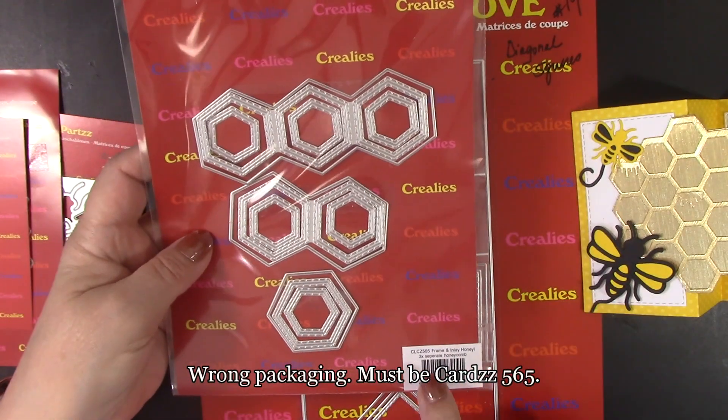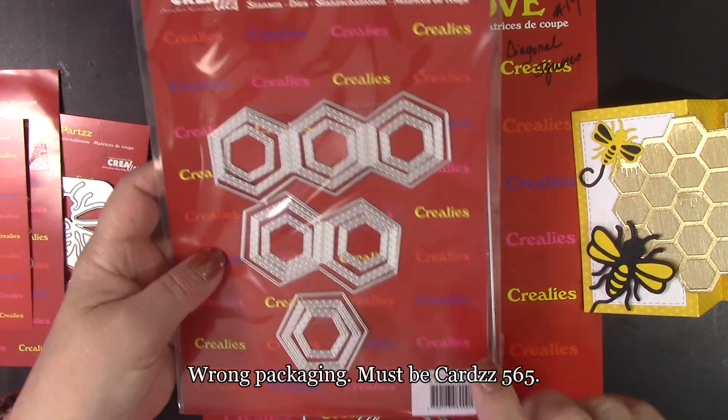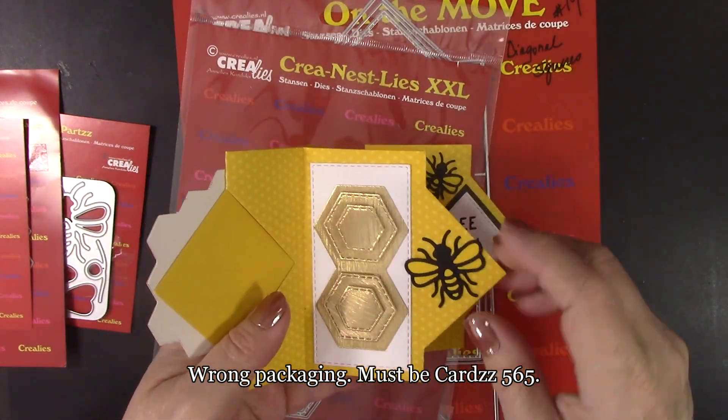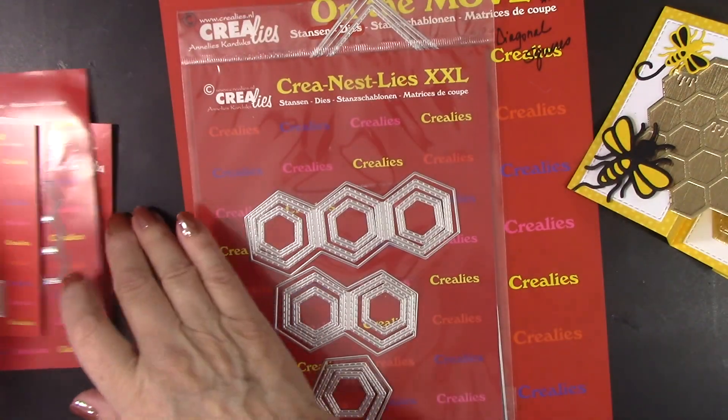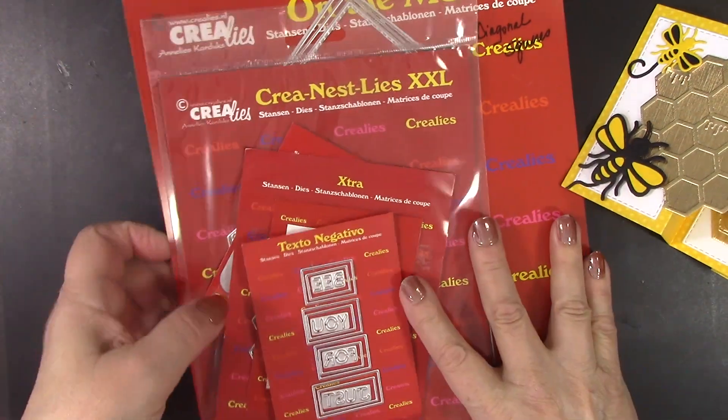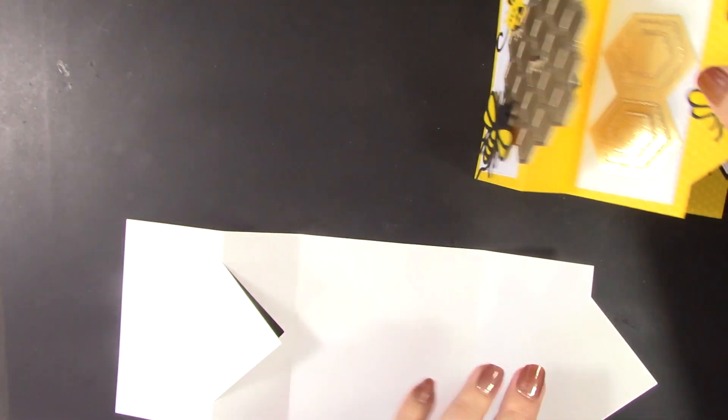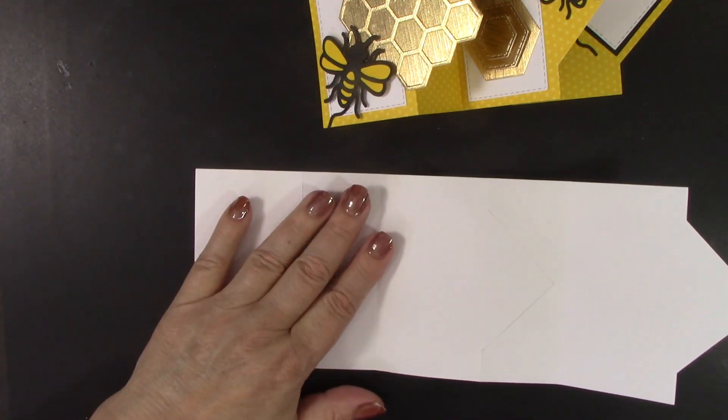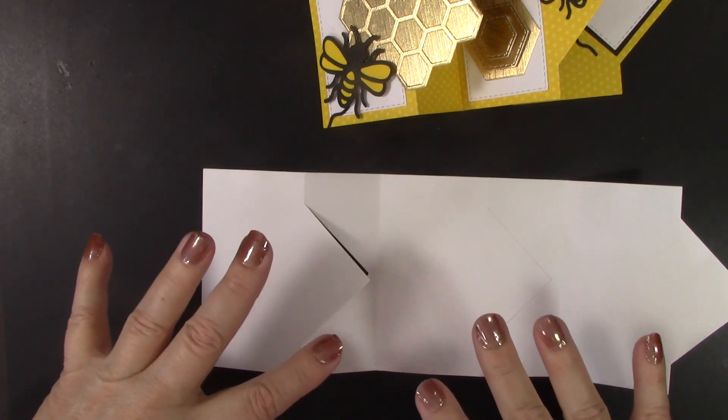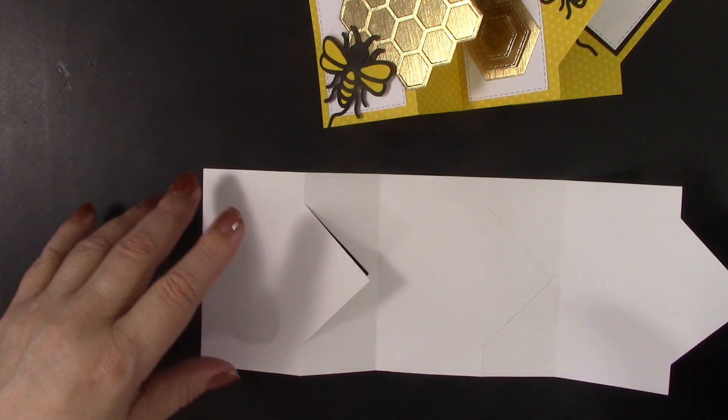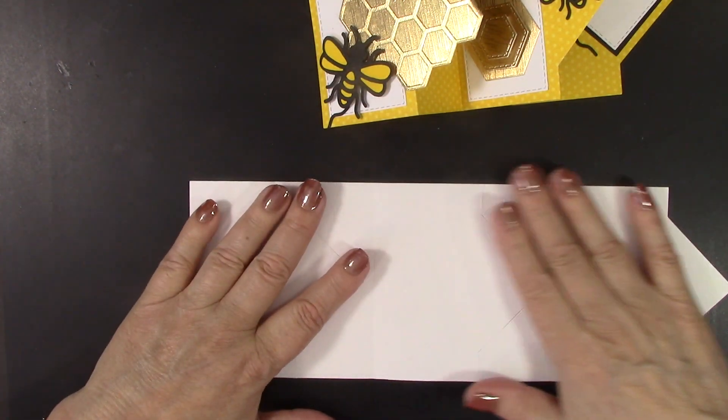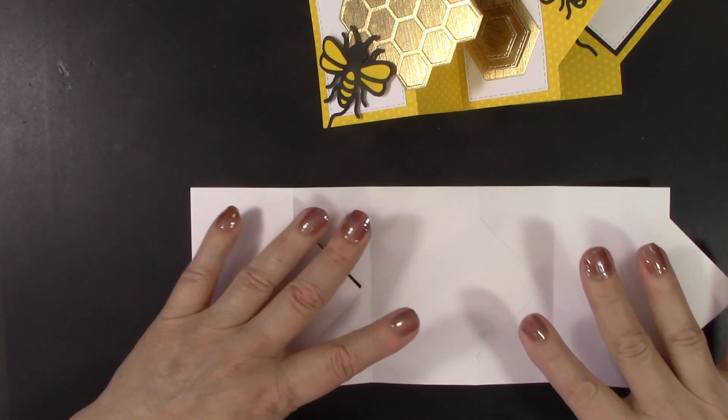And then there is this one that is called Frame and Inlay Honey, which is like some more honeycomb. I used it layered here, and I am going to use it again on the card that I create with you. So I am going to show you how easy it is to make a card like this one, and then I am going to add a couple of easy steps to make it into a surprise pop-up in the inside of a card by just adding two pieces of cardstock. So I have cut that main piece here out of white cardstock.